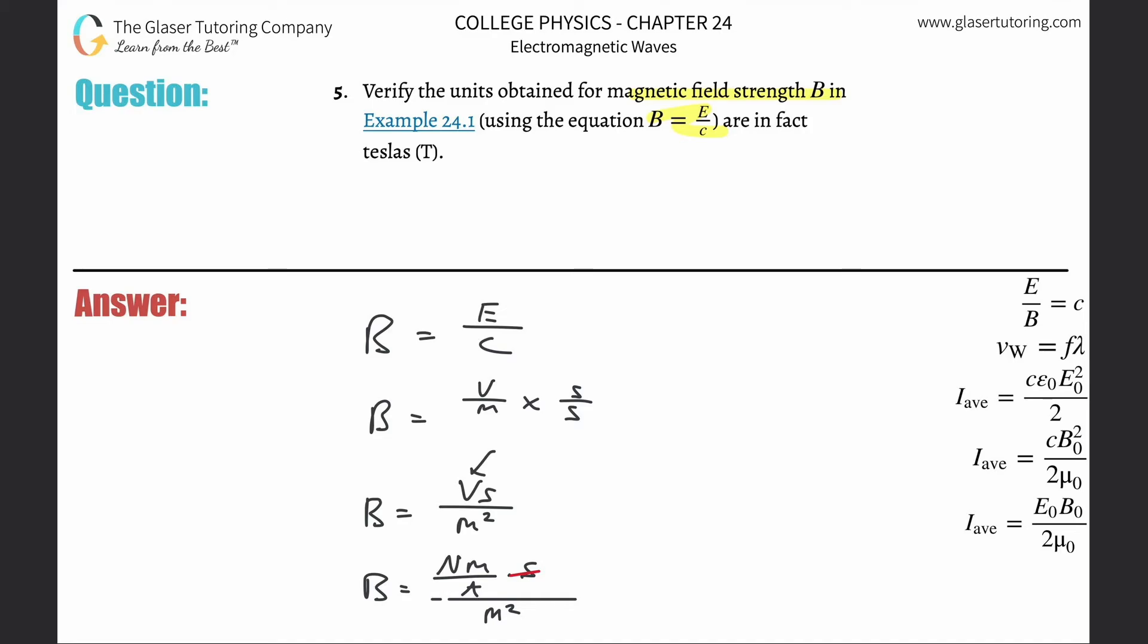So what I'm going to do is multiply by the reciprocal of that denominator to get rid of those seconds. So that's going to be times one over meters squared. Notice how one of the meters now will cancel, and what you're left with now is newtons per ampere meter.